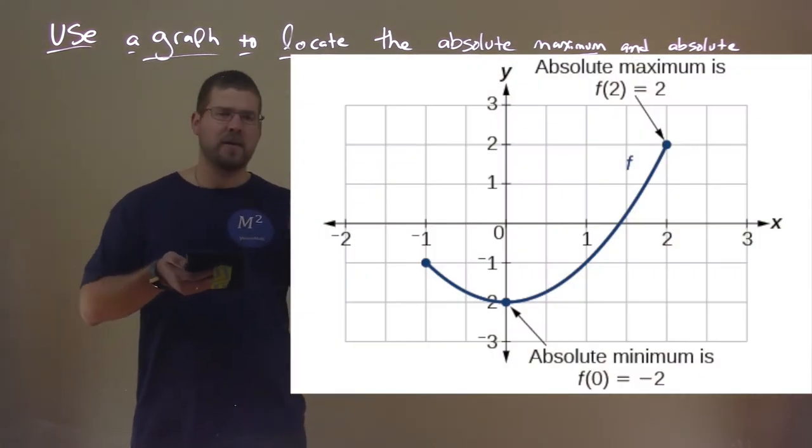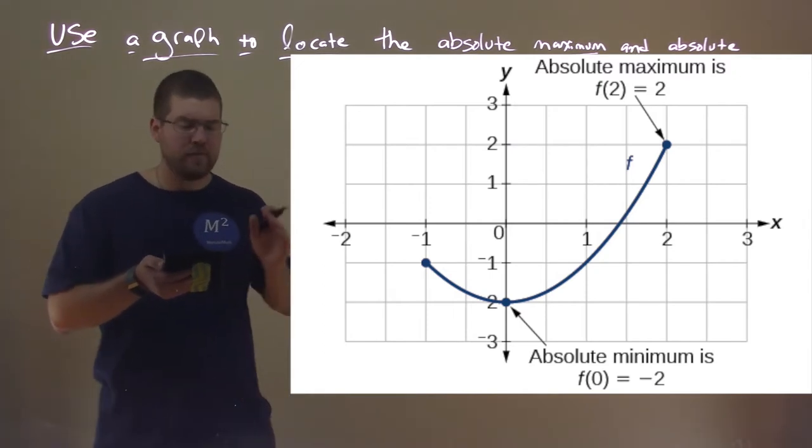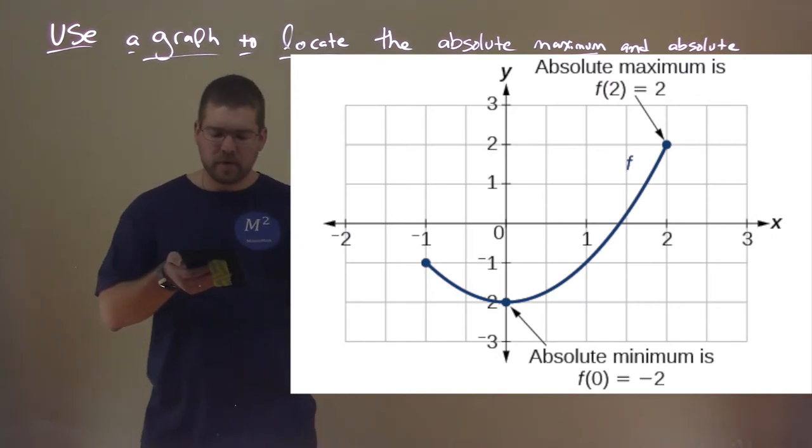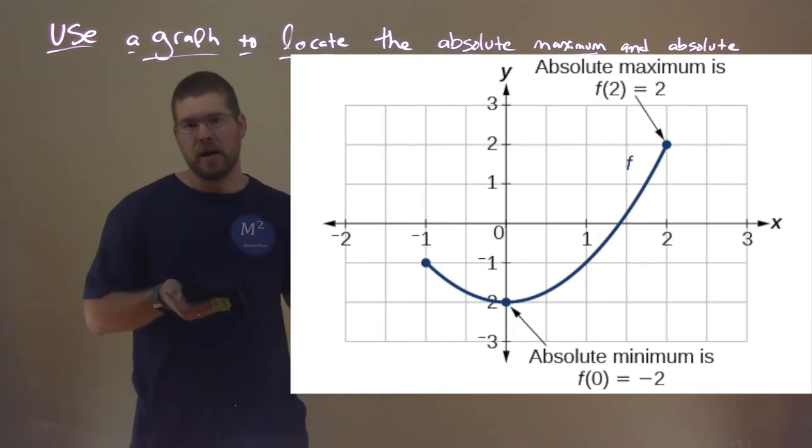This here is a function that's truncated some. And now notice that we have two endpoints there. The first is the absolute minimum here with f of 0 is equal to negative 2. So when x is 0, we have a y value of negative 2, and that's an absolute minimum of the graph, the lowest possible value on that graph.